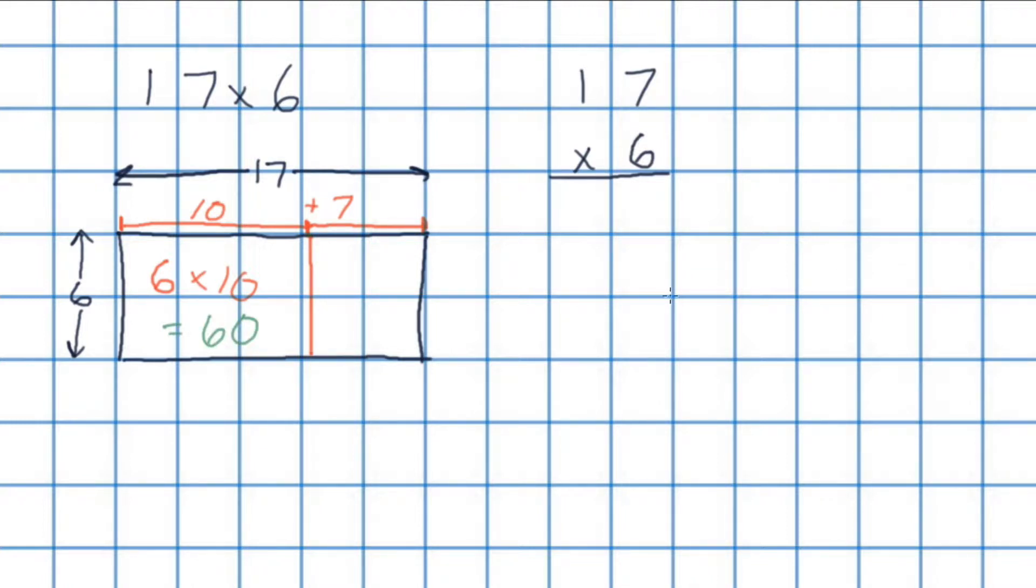Moving on to our other smaller rectangle, we have 7 as a side length multiplied by 6. So 6 multiplied by 7, and that is equal to 42.